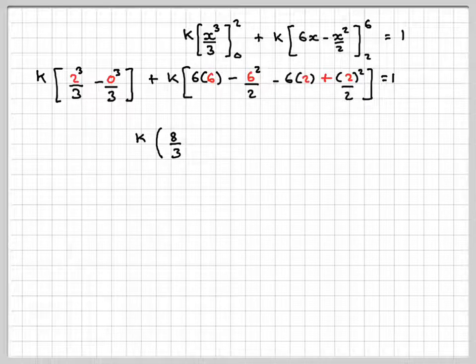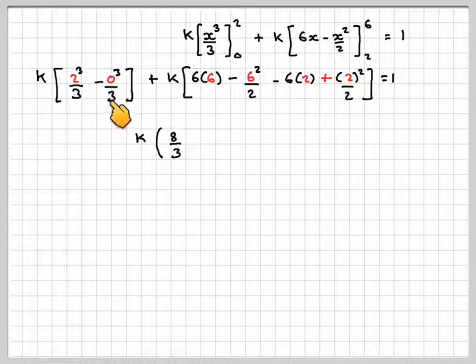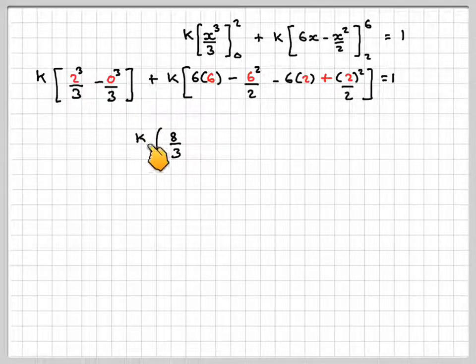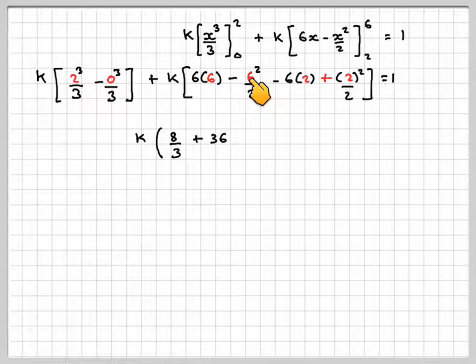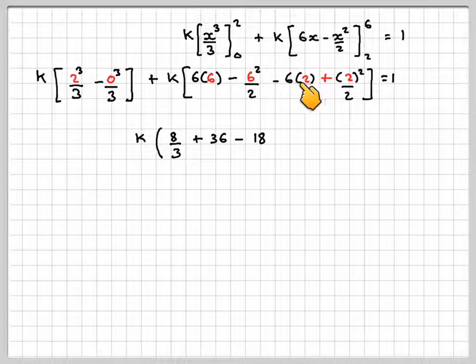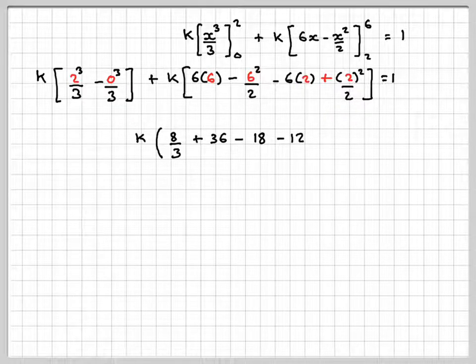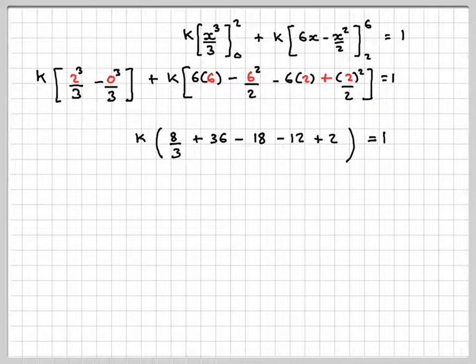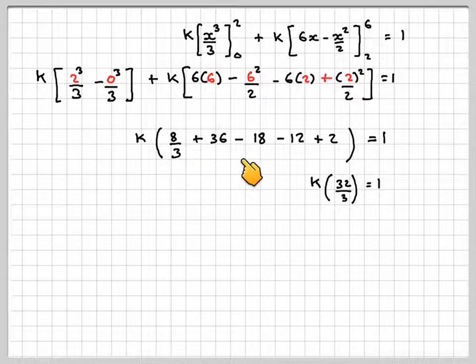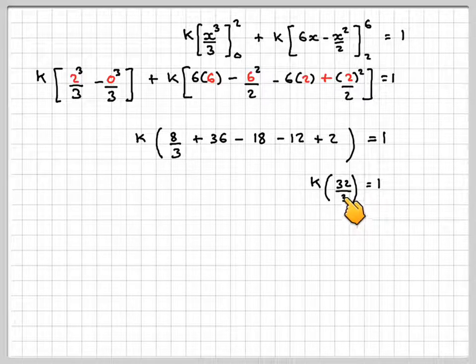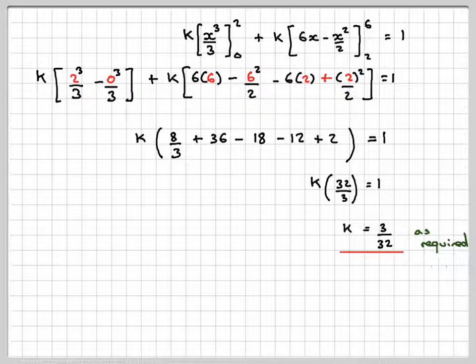So this becomes k(8/3), this is nothing so we'll just ignore it, and k will come out as a common factor. So we're going to have 36 minus 18 minus 12 plus 2. Now 2² is 4, 4 divided by 2 is 2, so plus 2 equals 1. This becomes, if you add this up, k(32/3) equals 1, therefore k equals 3/32 as required.